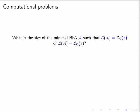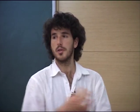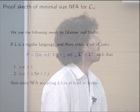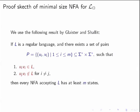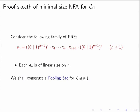Regarding the size of NFAs capturing the possibility or certainty language: we already saw brute-force gives exponential and double-exponential bounds. We prove these bounds are tight — there exist families of parameterized expressions for which any NFA for the certainty language must be of double-exponential size, and any NFA for the possibility language must be of exponential size. The proof uses a fooling set construction.